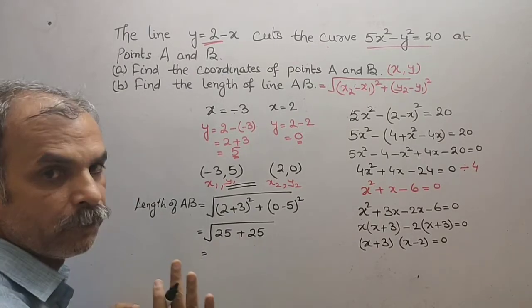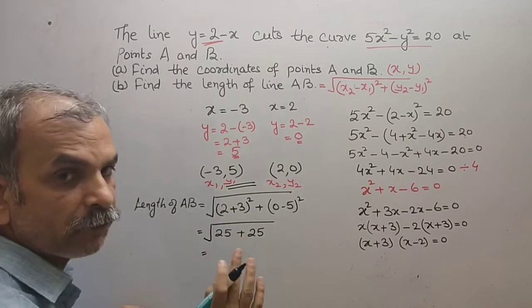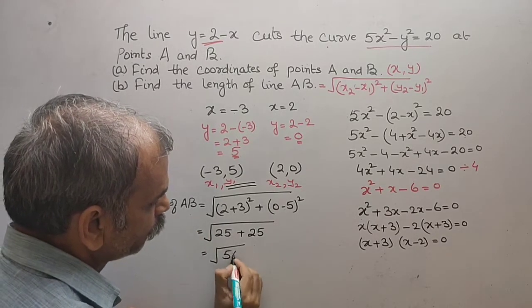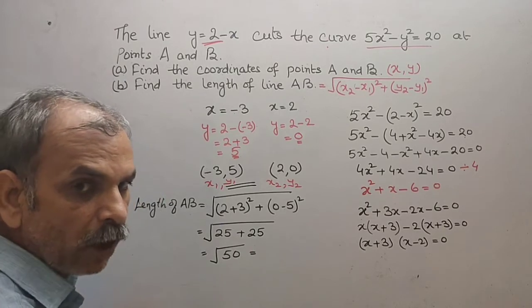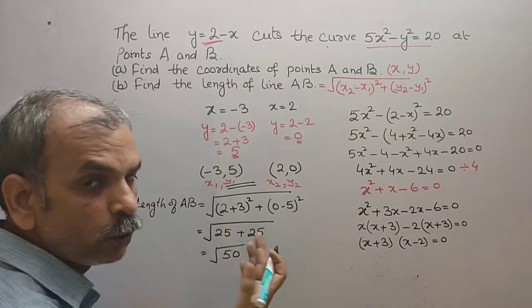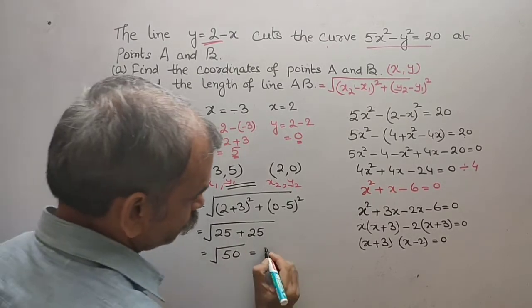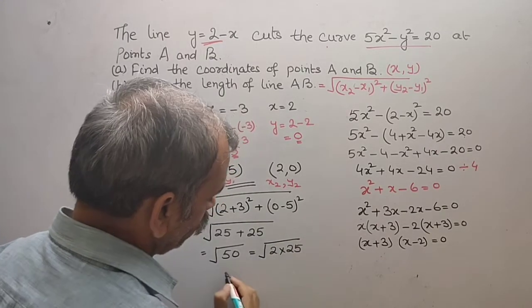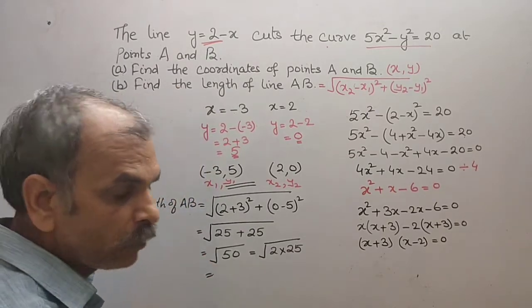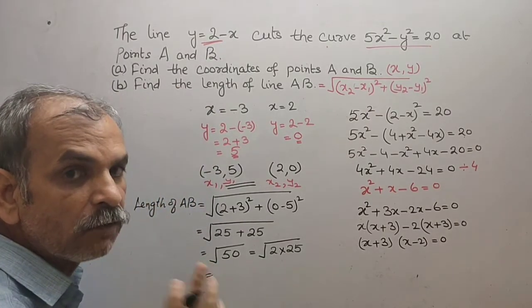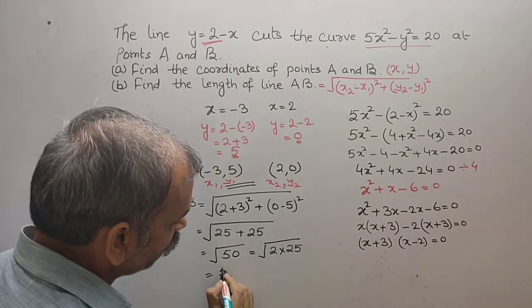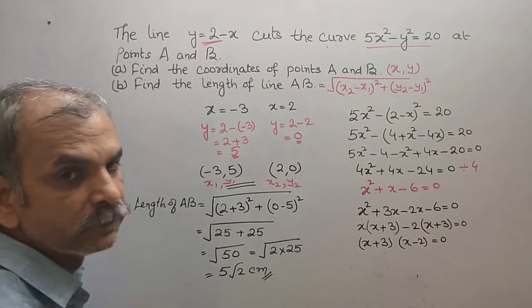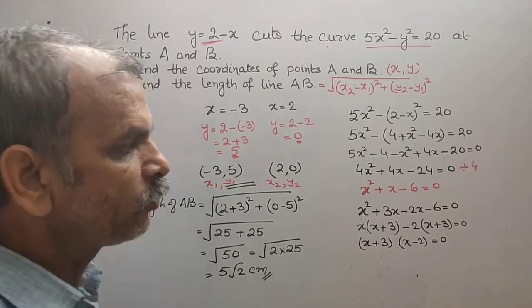Therefore our answer is what? This is 50. 25 + 25 is 50, √50, that is equal to... Now we can say it's 2 × 25, that is equal to what? 25 is the perfect square of 5, so we will get 5√2 centimeters is your length. So like this we have to do it.